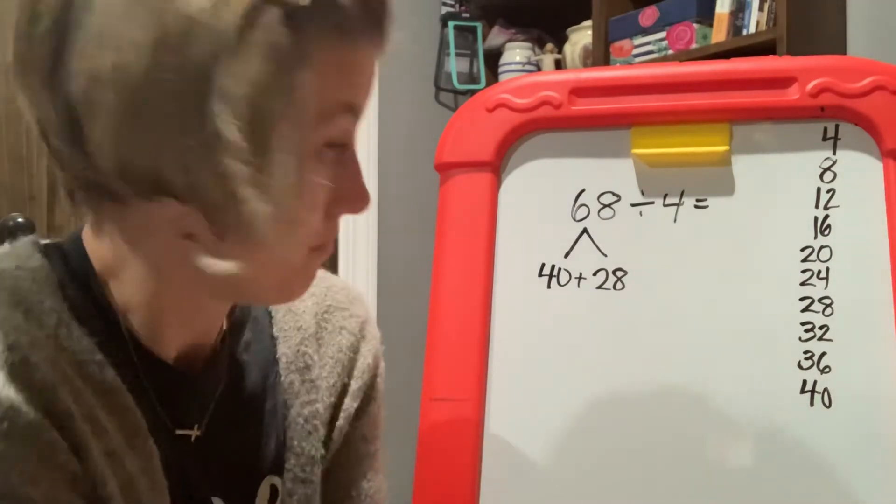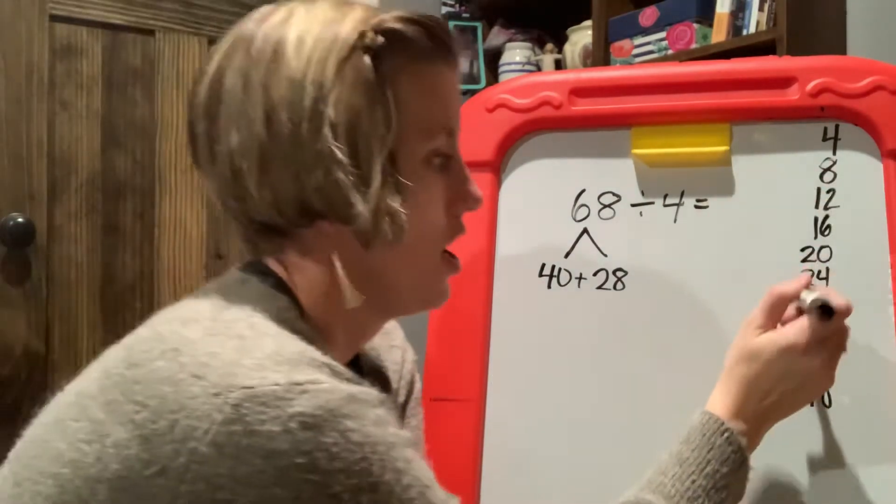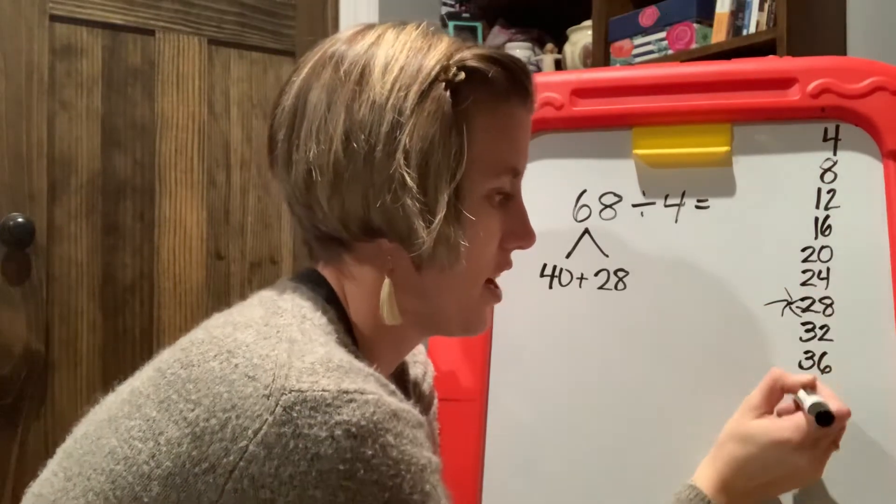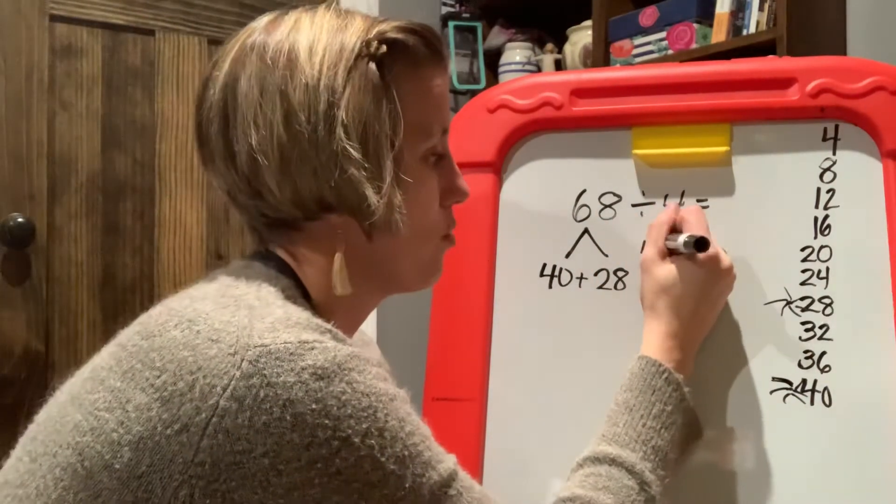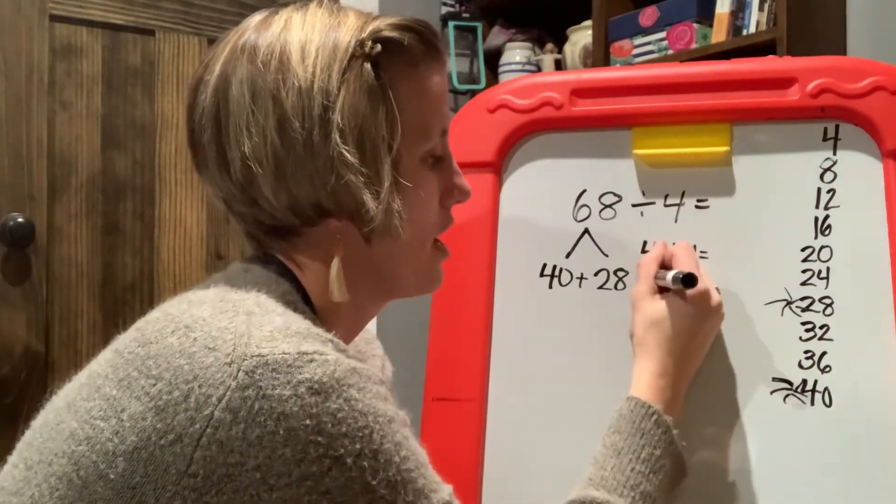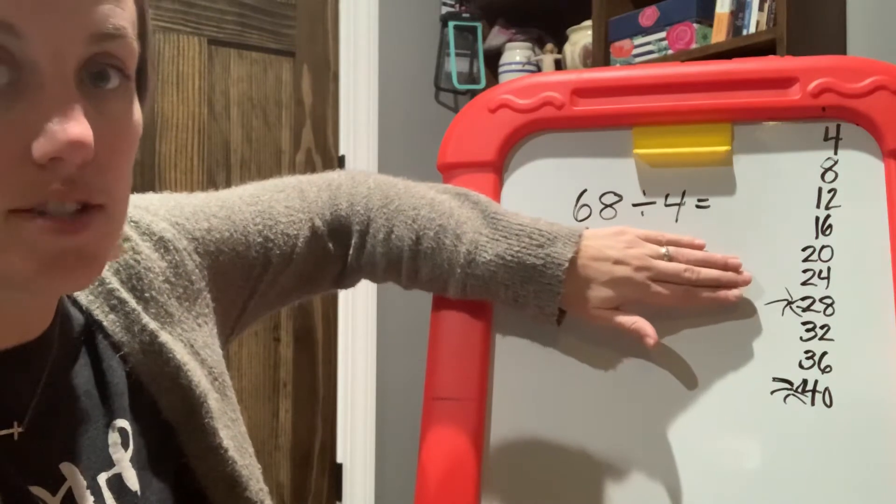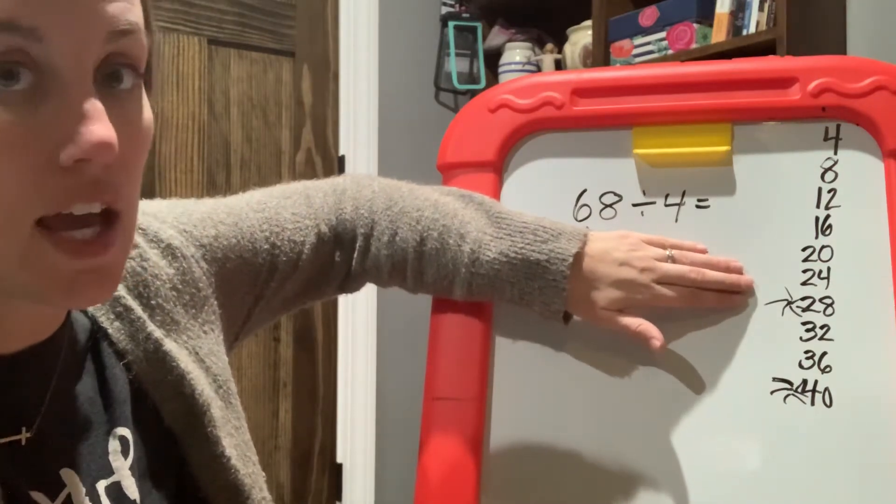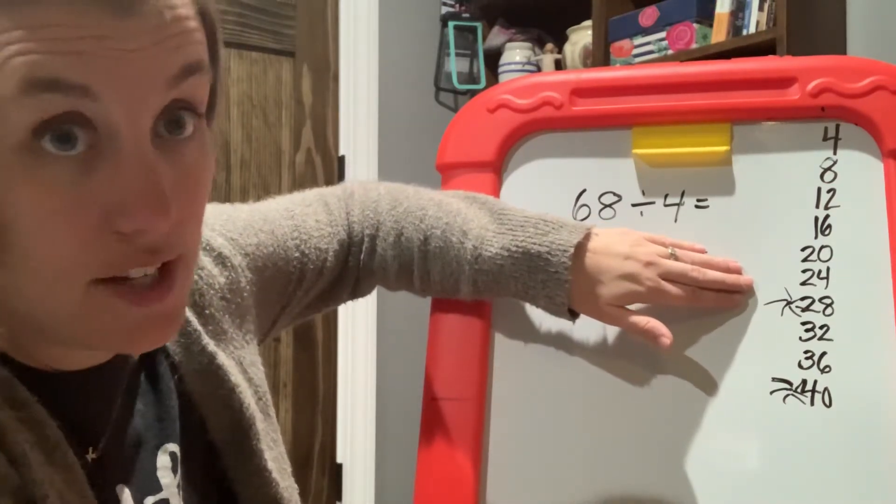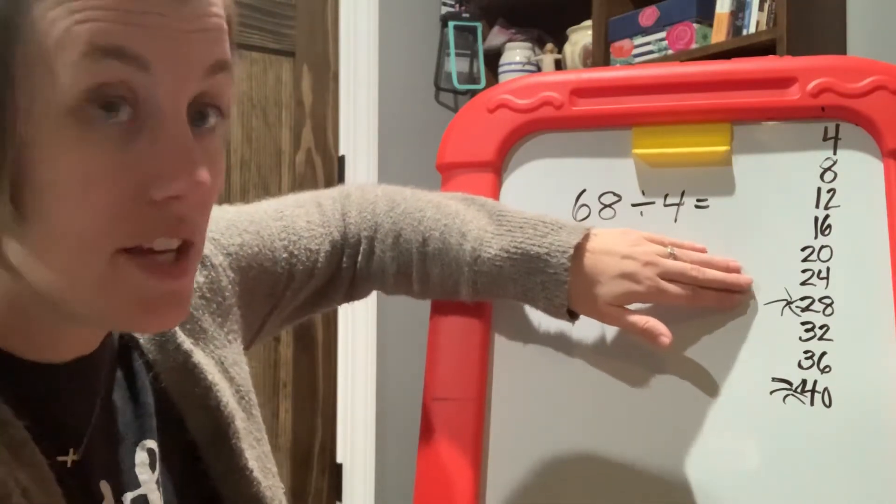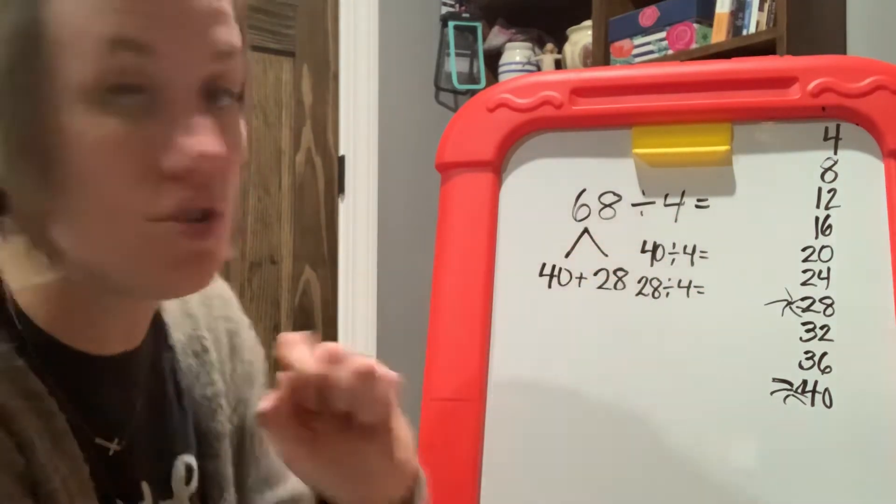Now is anyone super excited about anything? I hope you're over there saying, Oh, I see 28. We hit it there. Fireworks here and 40. We hit it there. We hit it twice. So we have 40 divided by four and we have 28 divided by four. We've turned this one division problem that looks kind of scary because we know 68. We know, we don't know what times four equals 68. I don't know what that is. And so that's scary.